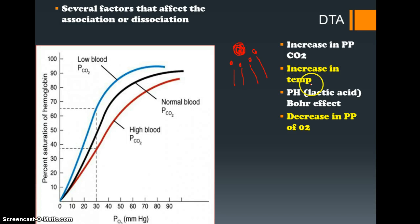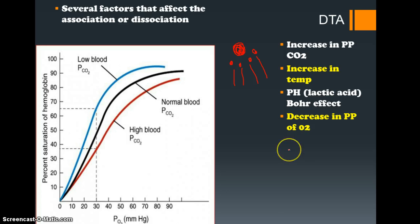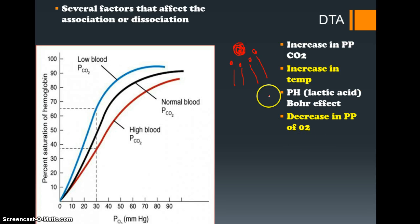Other factors that affect dissociation are an increase in temperature, an increase in pH or acidity, and a decrease in the partial pressure of O2. When you exercise you have an increase in CO2, an increase in temperature, potentially an increase in acidity from lactic acid, and a decrease in the partial pressure of O2 at the site of the working muscles. All of these factors encourage dissociation, predominantly at the working muscles where all these changes take place.